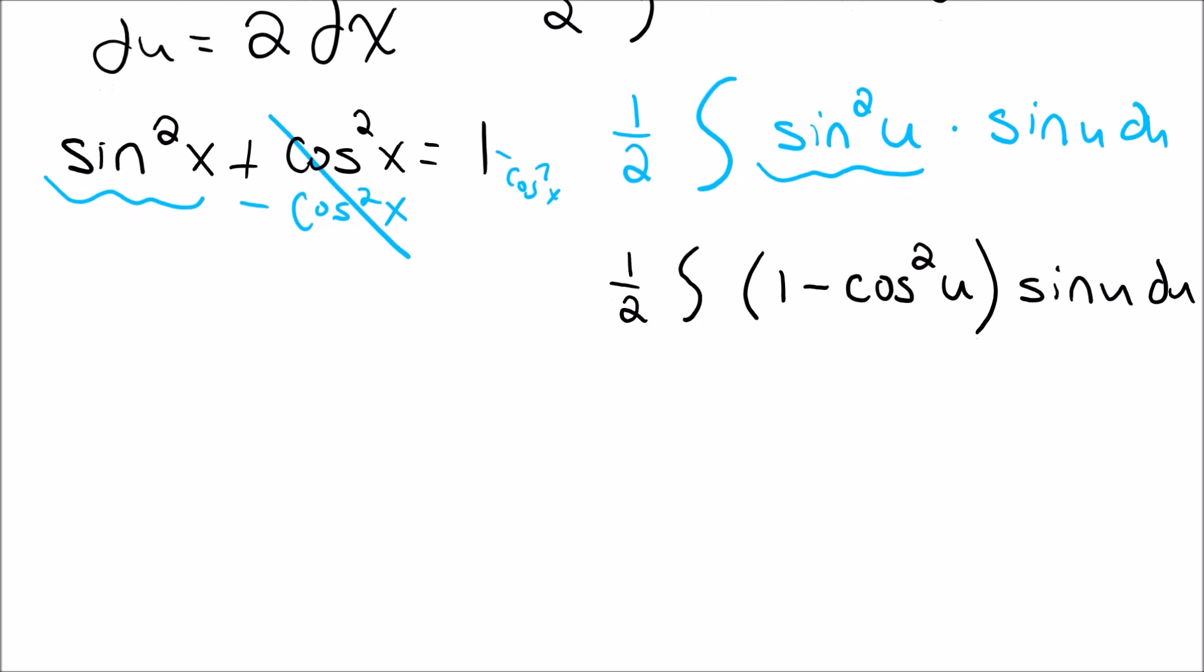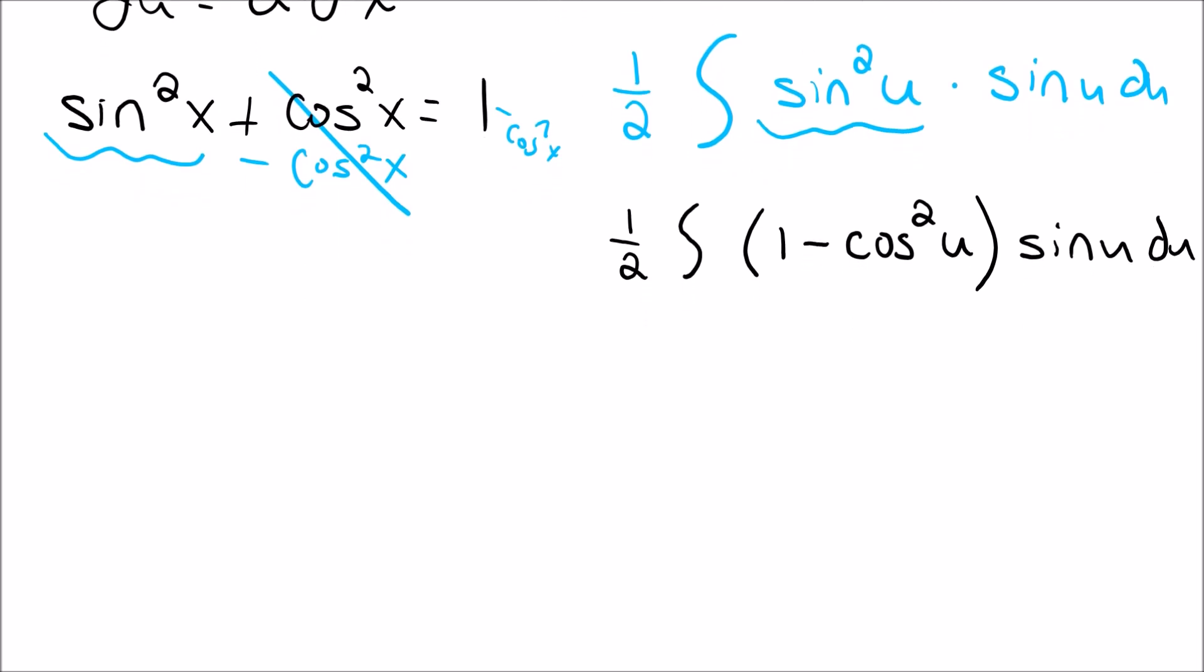And this is going to be where I'm going to use a second substitution in this case. So let's call this v. And what I'm going to do is I'm going to let v be cosine of u. And if that's true, then I know that dv, the derivative of cosine is negative sine u du. So now again, now I want to substitute back in those v's into this problem. Right again, notice that I have a negative sine u, but my problem has a positive sine u in this case. So I need to multiply by that negative 1 to get that negative sine u du.